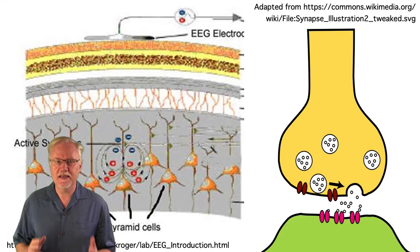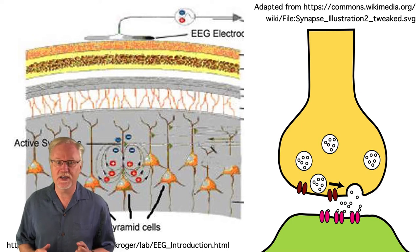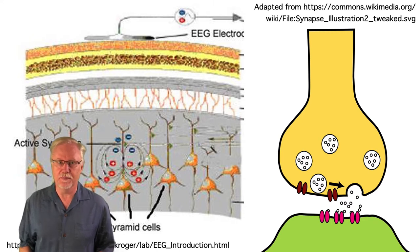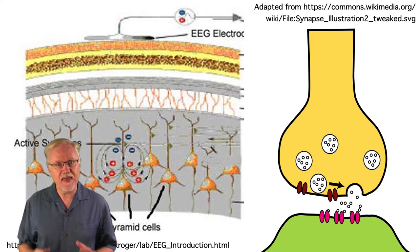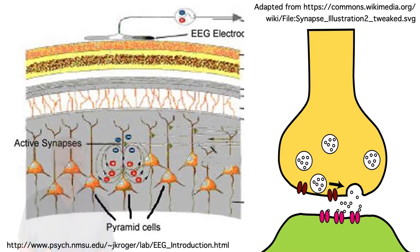In almost all cases, ERPs are the result of the postsynaptic potentials that are produced during neurotransmission. Except under extremely unusual circumstances, action potentials can't be detected from the scalp. So ERPs mainly reflect the inputs to a set of neurons, not the output of those neurons.